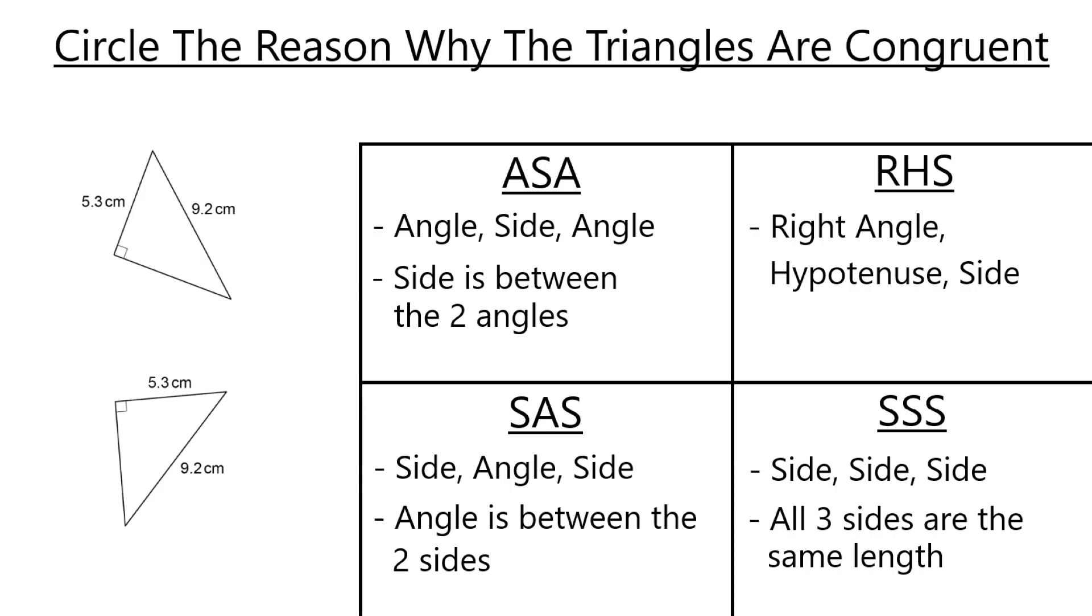Now these four rules, if one of them is met, it means that the triangle is congruent. So let's go through each one at a time and see whether it is correct. Now ASA, that means angle, side, angle. And so this side is going to have to be between two angles. So we're going to have the same angle, the same side, and then the same angle in one triangle. And then we're going to have the same pattern in the other triangle.